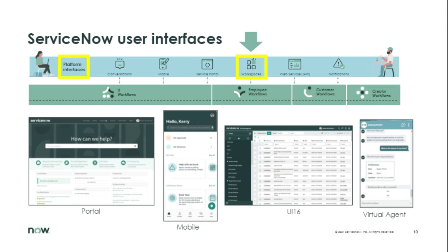Workspace is the most common place for agents within the enterprise to go do their work. Examples of these personas can come from IT, customer service, field service, HR — the whole gamut. I would consider workspace to be synonymous with UI 16 in its intended outcome — agents working behind the scenes can get their work done quickly. One might ask why so many user interfaces, and the answer is we've listened to our customers and invested heavily in making that user experience better.